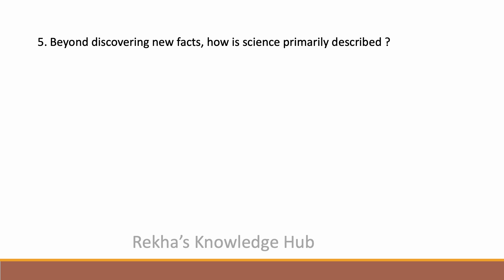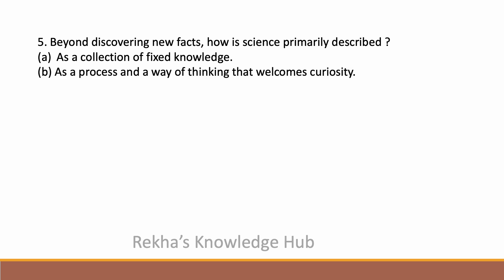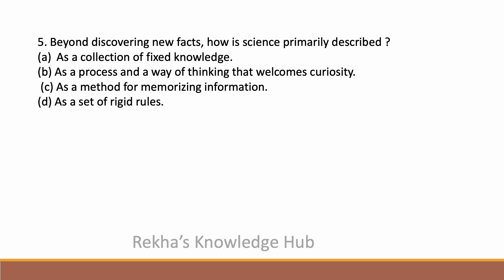Beyond discovering new facts, how is science primarily described? Options are: as a collection of fixed knowledge, as a process and a way of thinking that welcomes curiosity, as a method for memorizing information, or as a set of rigid rules. The correct answer is: as a process and a way of thinking that welcomes curiosity.